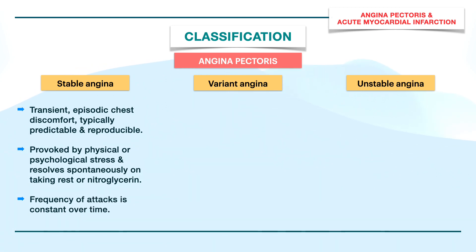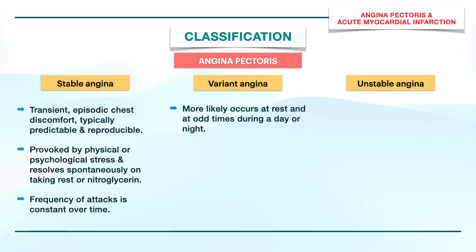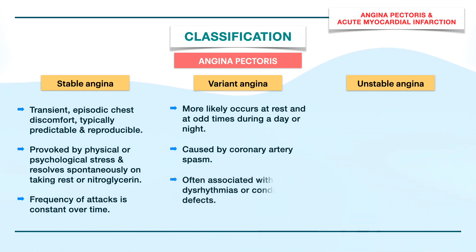Variant angina, also called Prinzmetal's, atypical, or vasospastic angina, occurs more likely at rest and at odd times during the day or night. It is caused by coronary artery spasm and is often associated with dysrhythmia or conduction defects.